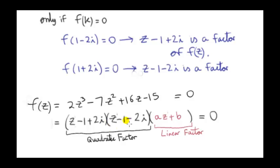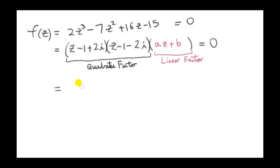We found two linear factors of our cubic equation. If we multiply two linear factors together, we get a quadratic factor where the highest power of z is 2. In order to get the cubic equation, we must multiply this quadratic factor by another linear factor where the highest power of z is 1. Here is a general linear expression: some number a multiplied by z plus some other number b, where a and b are fixed numbers we need to determine. To find this linear factor, we divide our cubic by this quadratic factor.